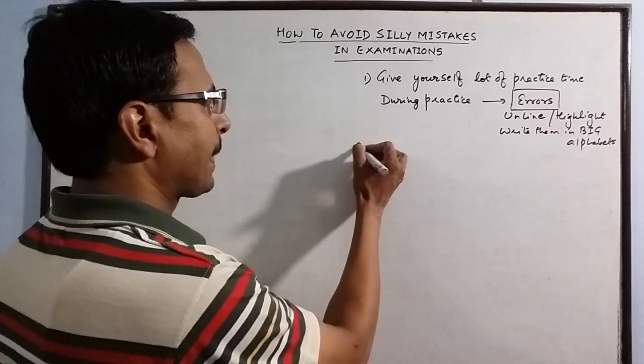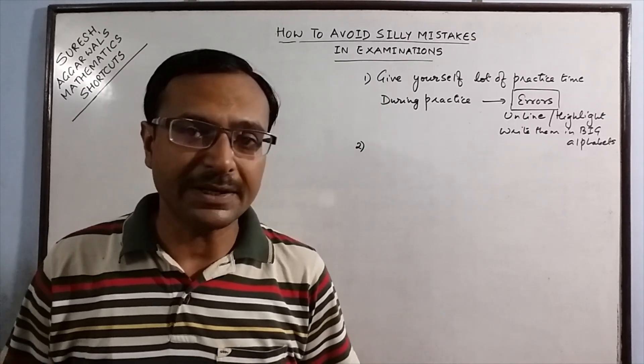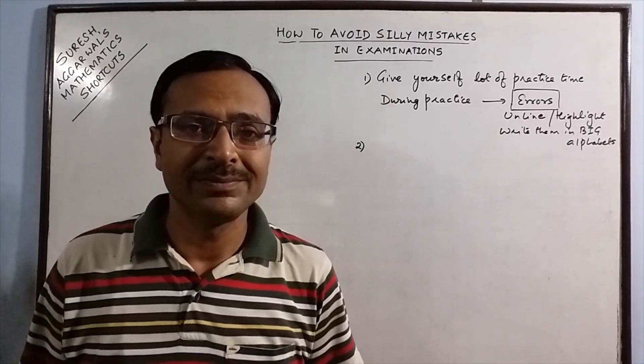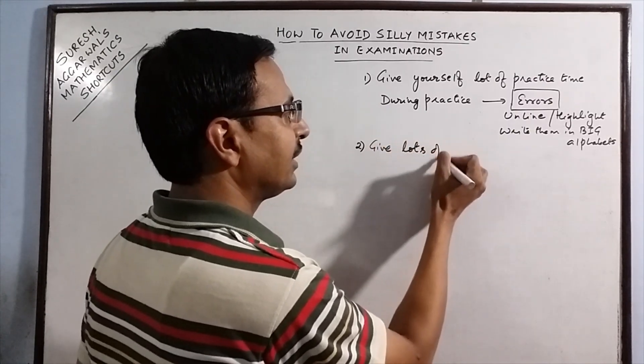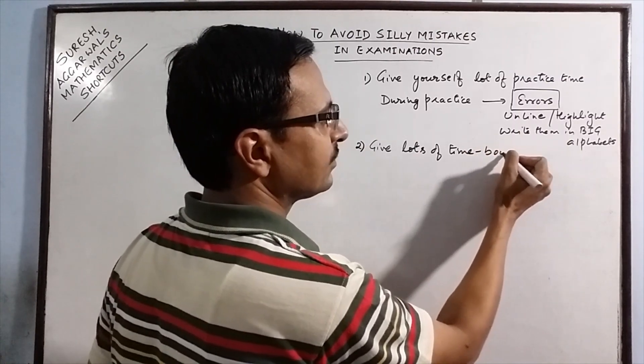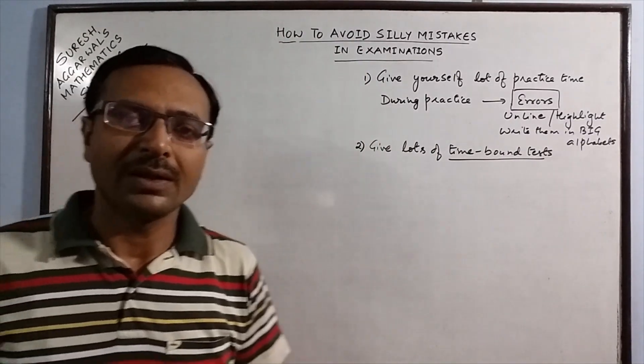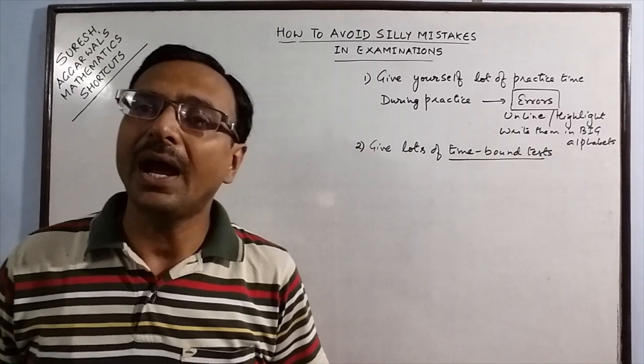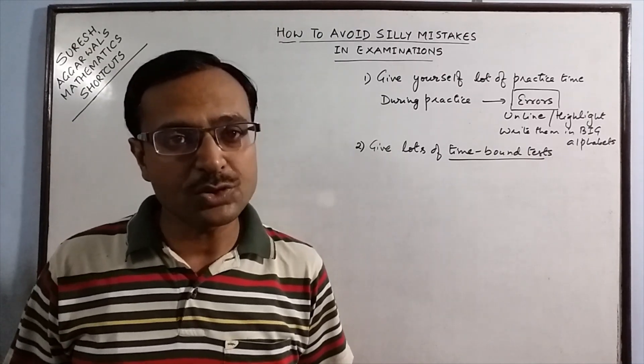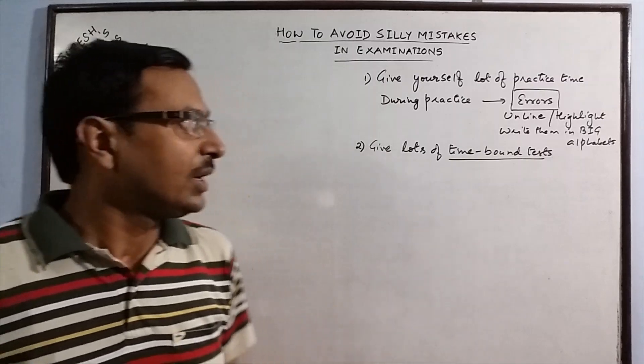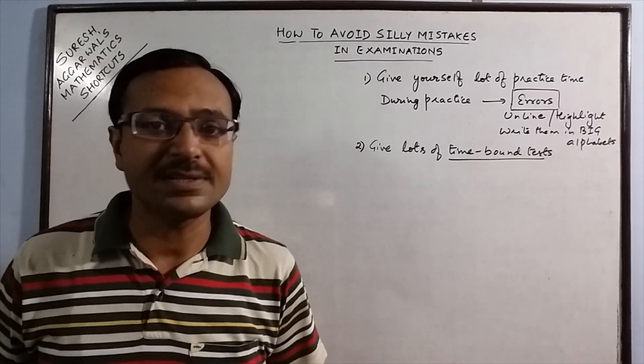Second is the errors which come up in examination unexpectedly are mostly due to time constraint. So you have to give yourself lots of time-bound tests. Students commit this mistake at home. They study according to their convenience and they do not take sufficient number of questions and give themselves a challenge to complete those questions within a stipulated time. Time-bound tests is very essential for removing these silly mistakes in examinations.